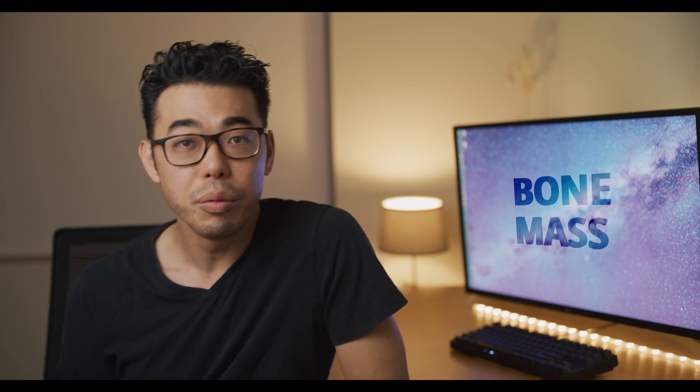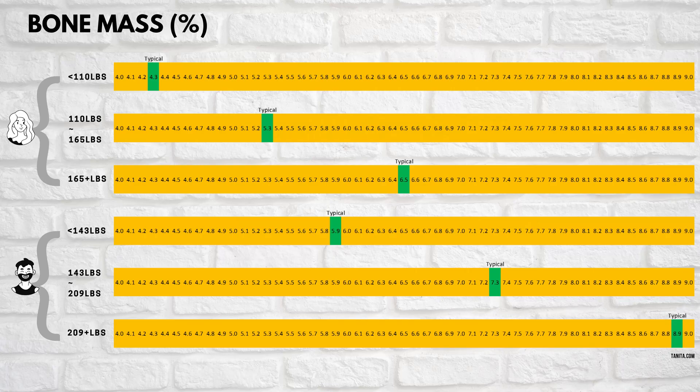Next, bone mass. Bone mass is exactly what it sounds like — it's the weight of all of your bones. This is unlikely to fluctuate over a short period of time, but you'll want to keep an eye on it for directional changes over a longer period of time. These were the typical bone mass percentages that I was able to find at Tanita.com.